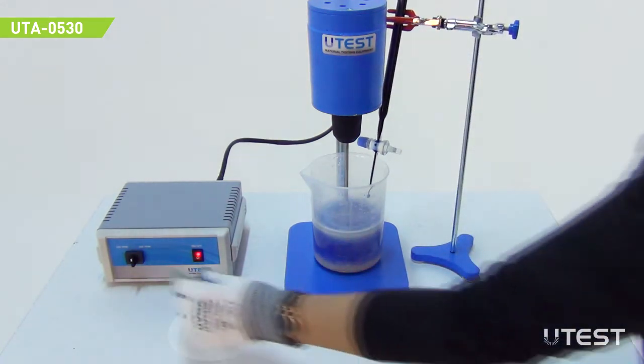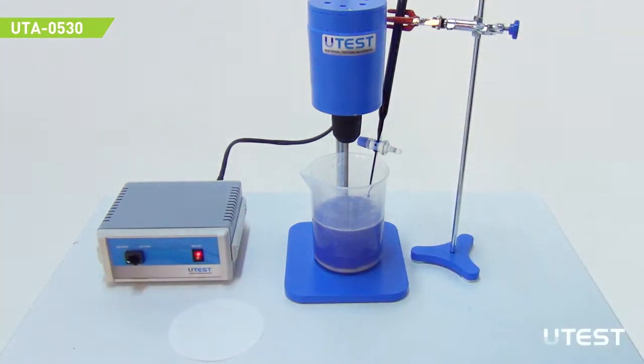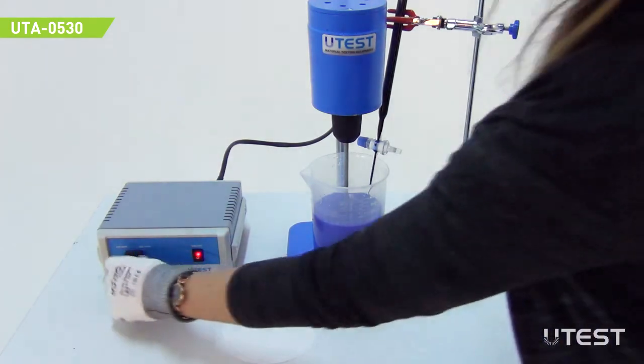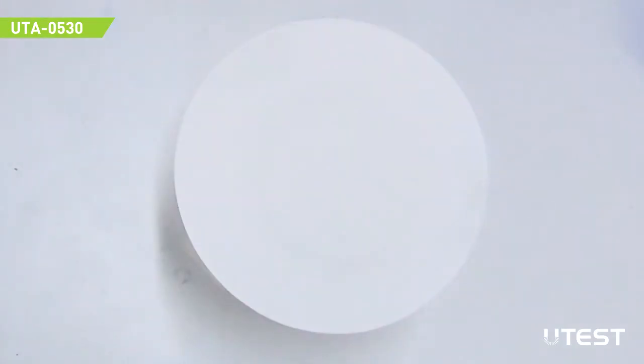Set the mixer to 400 rpm and the rest of the experiment will be conducted with this speed. After 1 minute of mixing, take 1 drop of solution by using the glass rod on a filter paper.